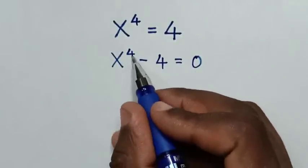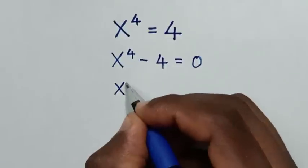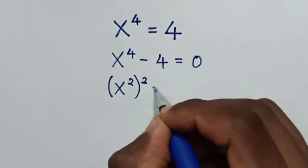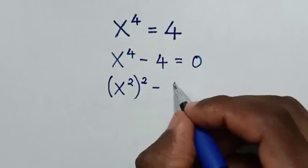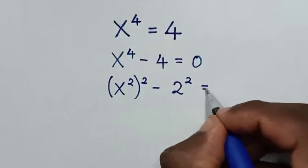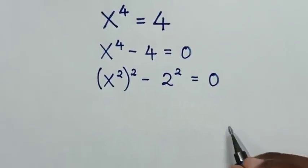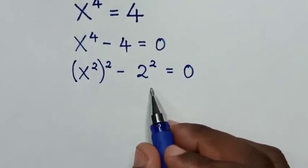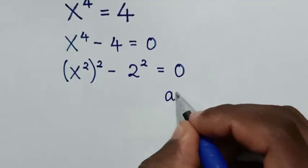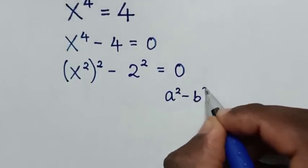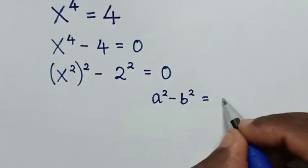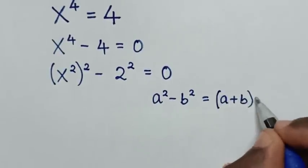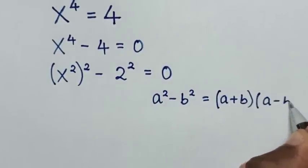Then x power 4, written as x square bracket square, minus 4, written as 2 square, is equal to 0. This part is in the form of a perfect square, so we will apply the rule a square minus b square is equal to a plus b bracket times a minus b.